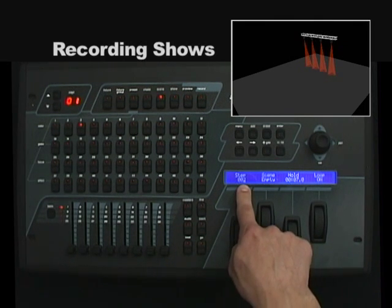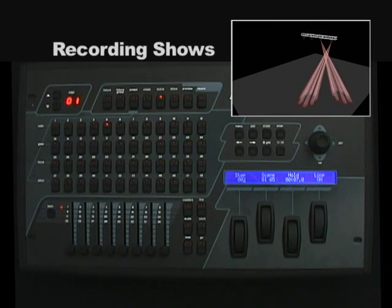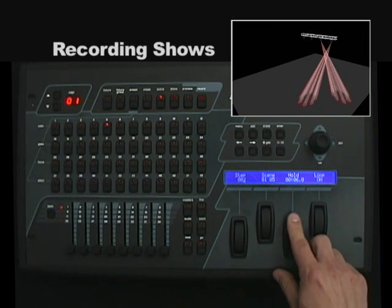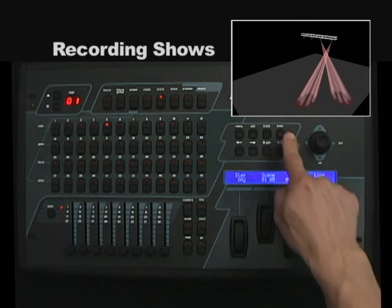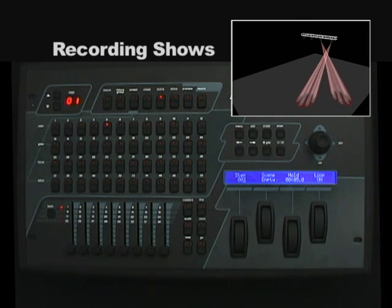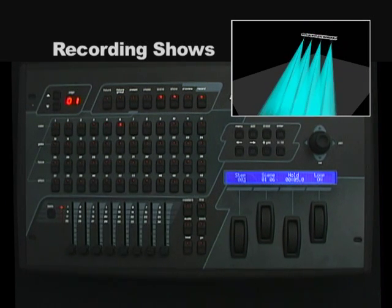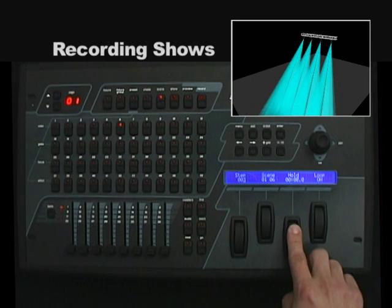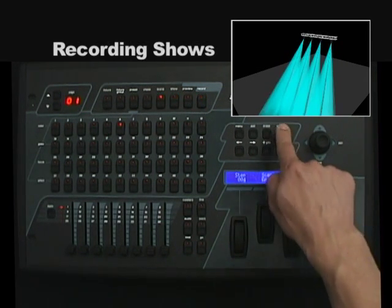Our show step will advance by 1. We'll select our next scene for a second show step — I'll set this to hold for 5 seconds, then press enter. I'll select the next scene and adjust the hold time to 10 seconds, then press enter.